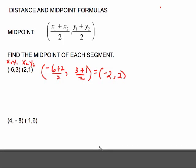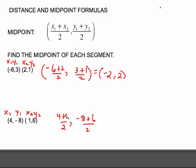Another example, same setup. We're going to do 4 plus 1 over 2, and we will do negative 8 plus 6 over 2. It may be a good idea to label these like I did on the first one, because a common mistake is for people to put these two together and they don't go together — it's the x's that go together. This one just shows that not everything comes out even. 4 plus 1 is 5 over 2, which is 5 halves. You can leave it as an improper fraction or go to the decimal or mixed number. Negative 8 plus 6 is negative 2, divided by 2 is negative 1.